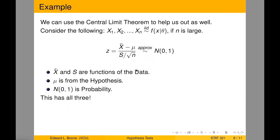Here's an example again. It looks almost exactly the same as before. Here, x bar and s are functions of the data, mu is from the hypothesis, and normal zero, one is our probability. So this has all three that we're looking for.